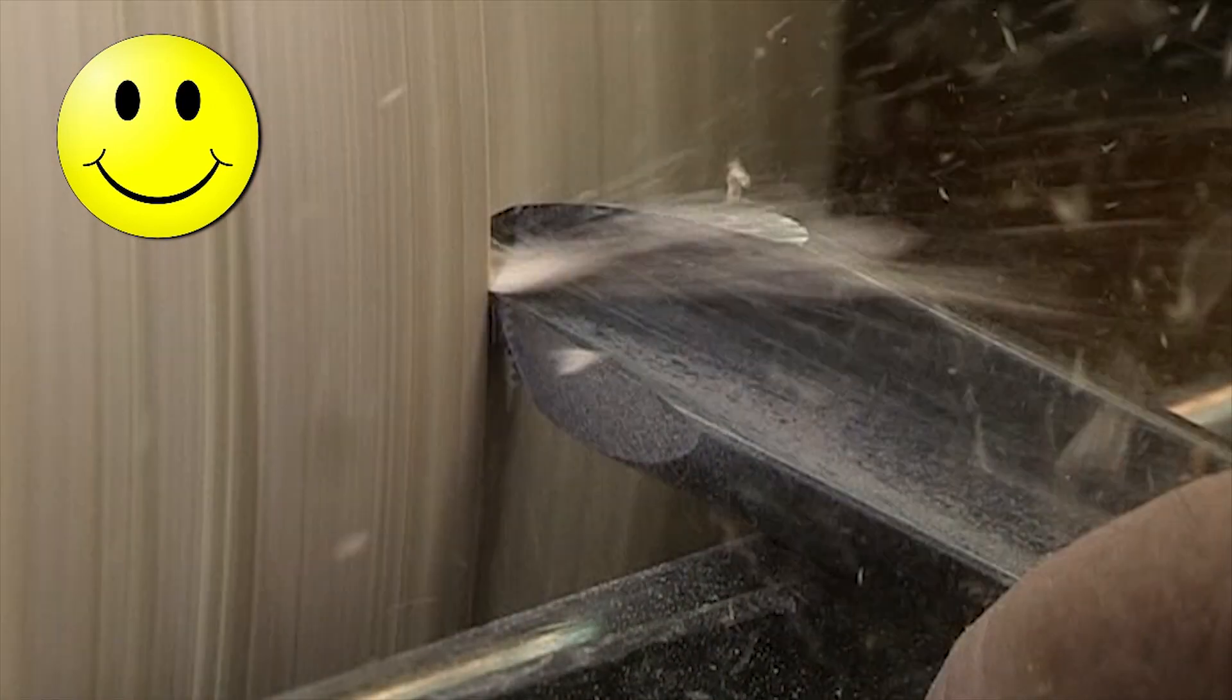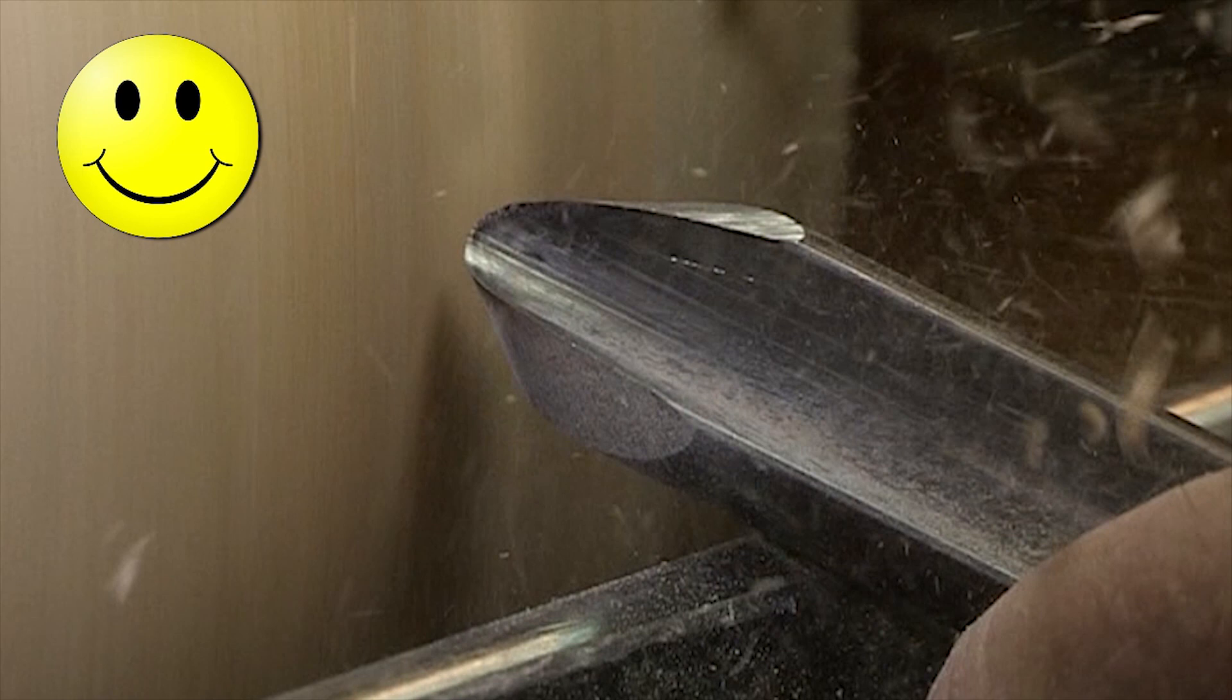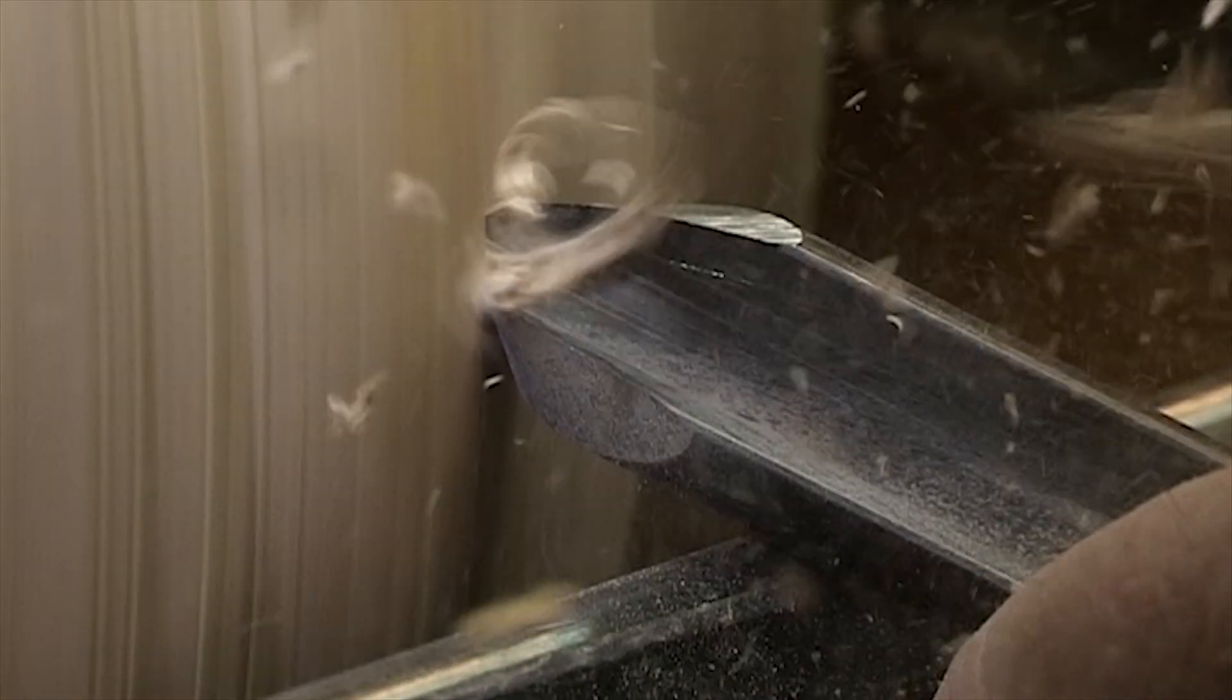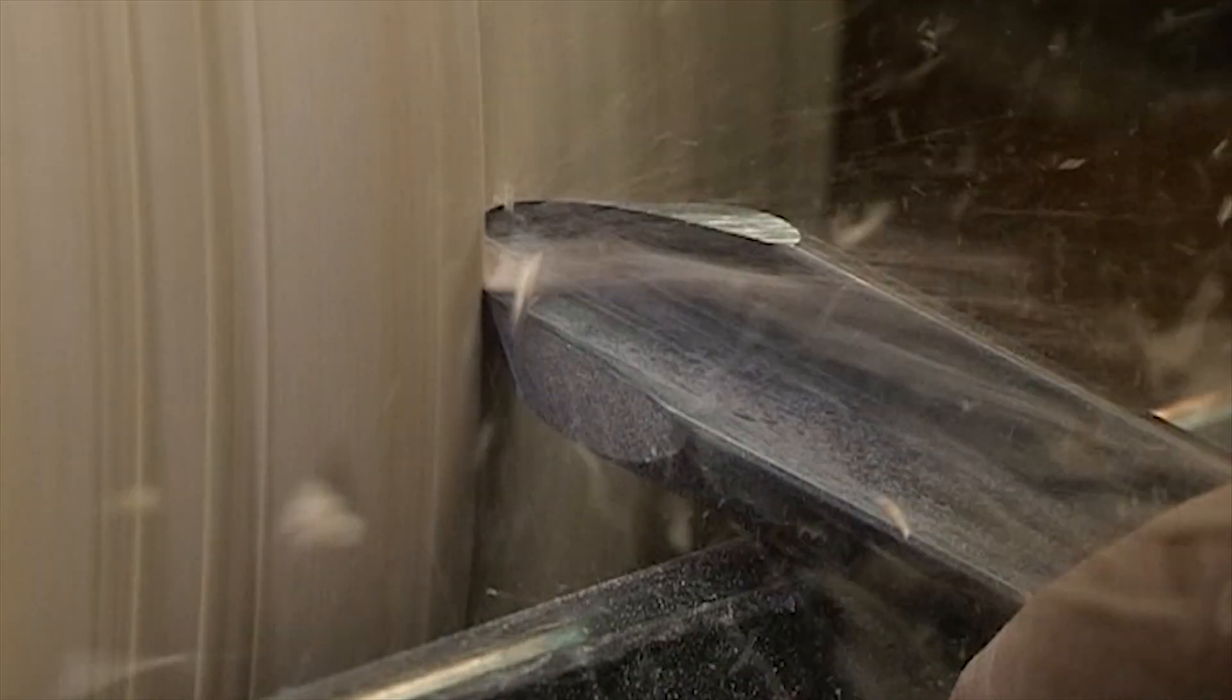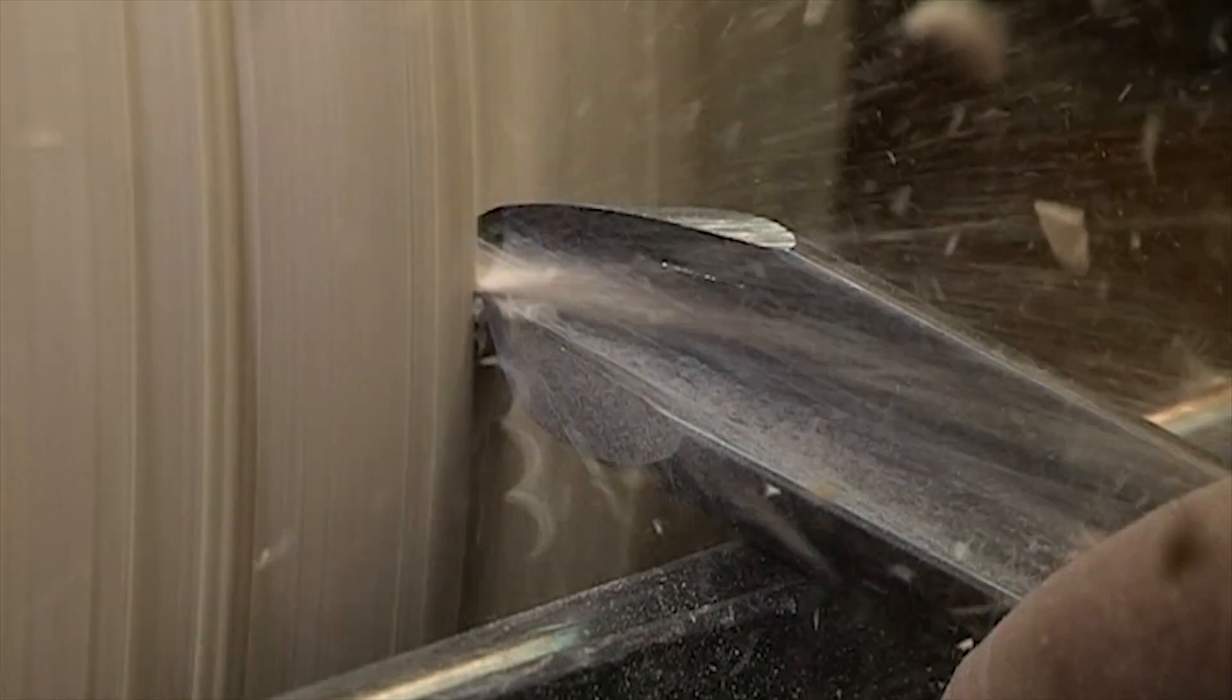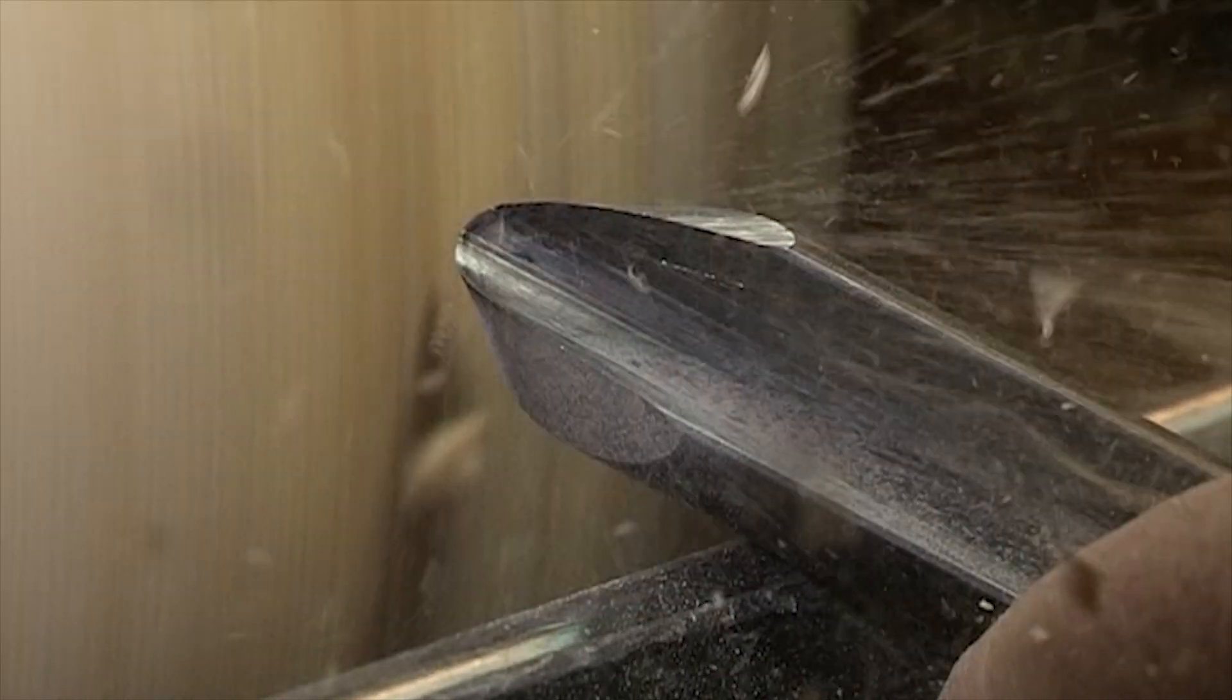So watch in slow motion. We're cutting, cutting, cutting, and then wait for it, whoops, there's air. So that's what happens. That's an interrupted cut. You're only going to be in contact with wood a short amount of time, and then you're going to be in the air. So it's in, out, in, out, in, out of air to solid wood.